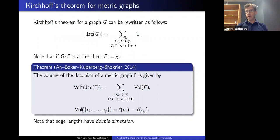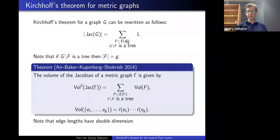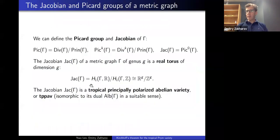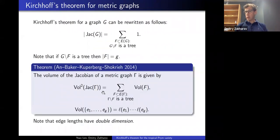Kirchhoff's theorem for an ordinary graph says the number of elements in the Jacobian is the number of spanning trees — equivalently, the number of subsets of the edge set whose complement is a tree. For a graph of genus G, the number of edges you need to remove to obtain a tree is exactly G, so we're summing over certain G-element subsets. The Jacobian of a metric graph is a torus and, being a tropical principally polarized abelian variety, it is a Riemannian manifold, so you can ask: what is the volume of this Riemannian manifold?